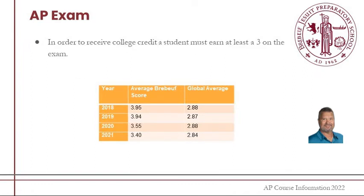Most importantly, I want my students to do well on the AP exam so they can receive college credit. A student must earn at least a three on the AP exam to get college credit. I have a chart here showing over the last four years the average Brabuff score versus the average global score.